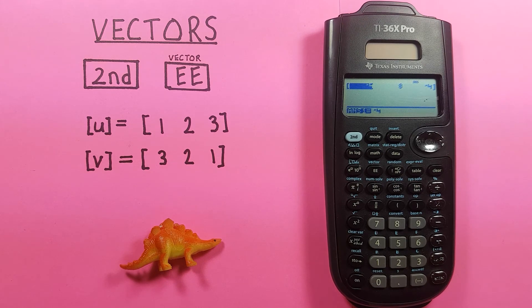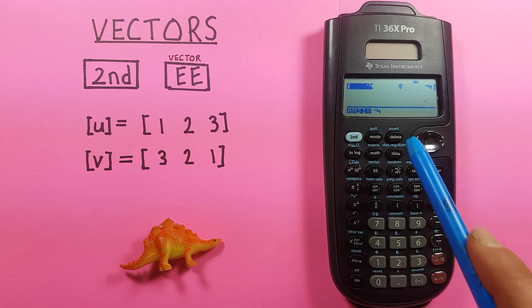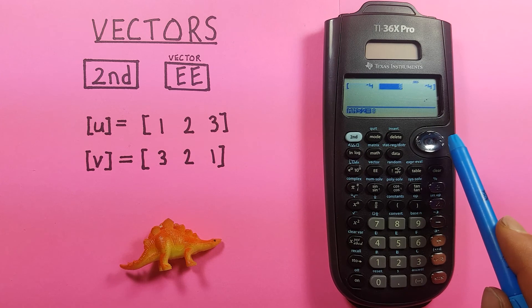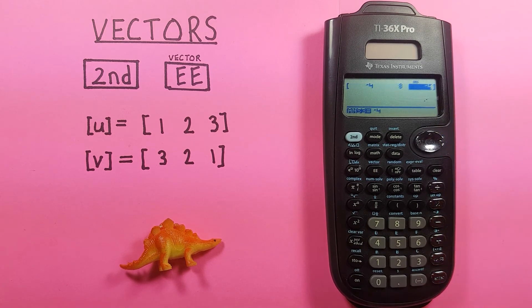And we see we get our cross product of these two vectors as negative four, eight, negative four. All right. I hope this helps, and good luck on those tests out there everybody.